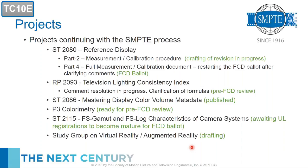ST 2086 was revised three months ago and is now published and available on the store. The P3 colorimetry project is ready for its pre-FCD review. It was pointed out that there wasn't a standard for P3 colorimetry, and somebody wrote it down. Most of the HDR stuff, if it comes to wide color gamut, actually covers P3 — so that's a real need in the market. It's quite amazing how the industry can be very well documented in certain areas and then someone asks where P3 is defined and there's a collective drawing in of breath.